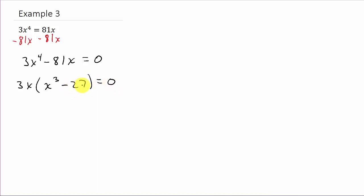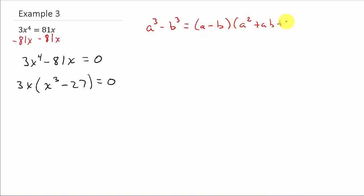Now, x cubed minus 27 is the difference of two cubes. If you remember the formula for factoring the difference of two cubes, we can write x cubed minus 27 as x cubed minus 3 cubed. So A is x and B is 3.